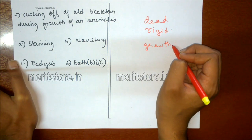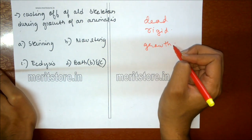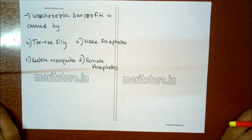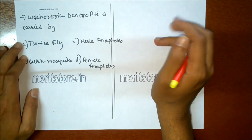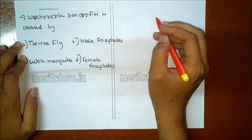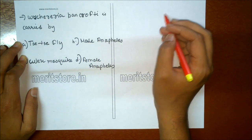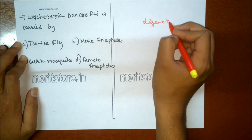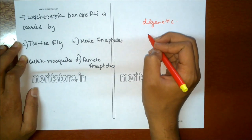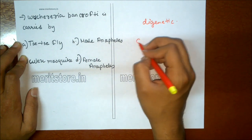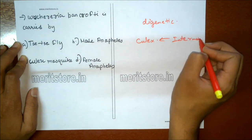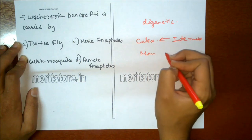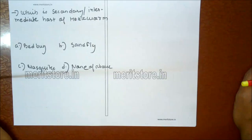Wuchereria bancrofti is carried by: A C.C. fly, B Anopheles male, C Culex mosquito, D female Anopheles. It is a digenetic parasite completing its life cycle in two hosts. The intermediate host is the blood-sucking insect known as the Culex mosquito, and the definitive host is man. So there are two hosts. Option C is the correct answer.